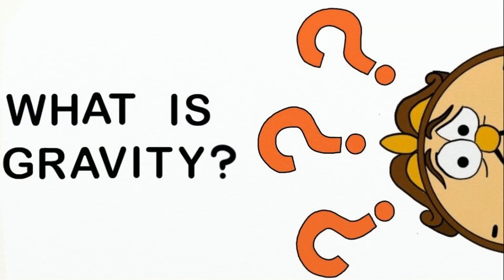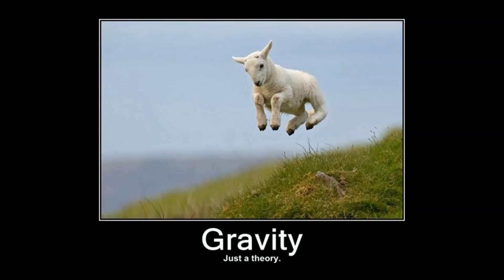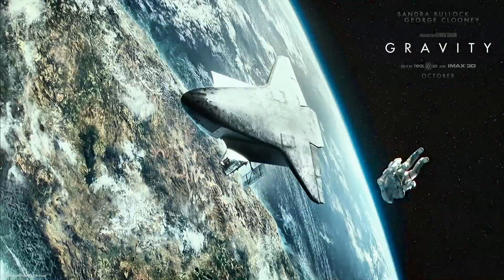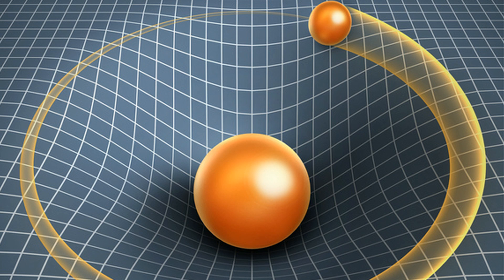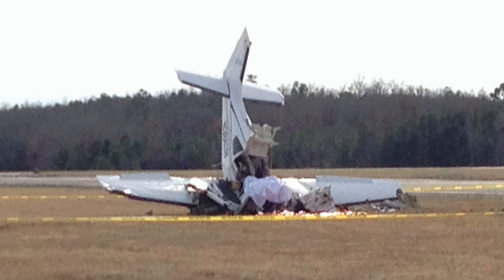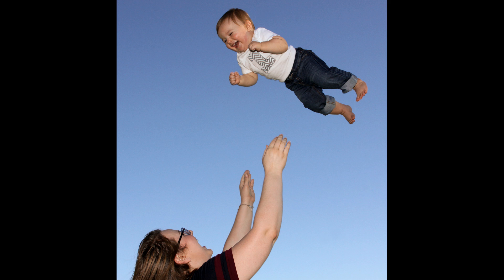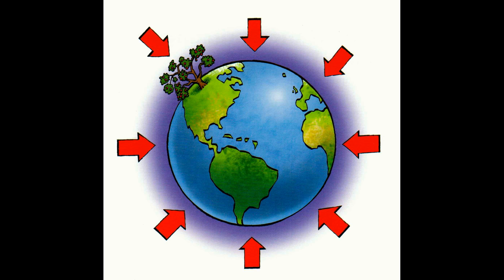Gravity may be the simplest of the forces to understand. Gravity is the pull exerted between all objects with mass. The larger their mass and the closer they are, the more they pull on nearby objects. And since planets like the Earth have tremendous mass, any objects nearby, like airplanes, skydivers, and grandsons, are pulled down toward the planet's surface.